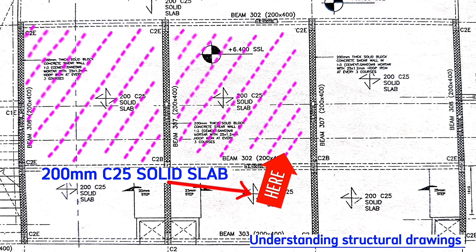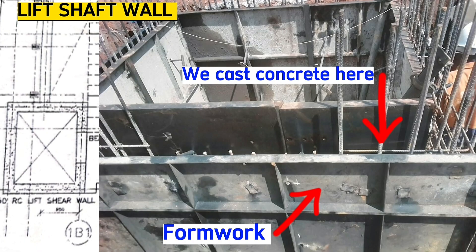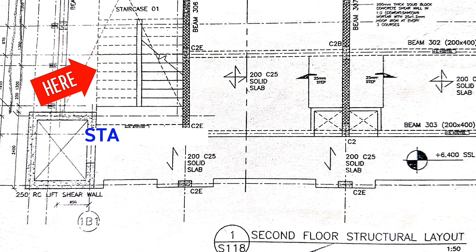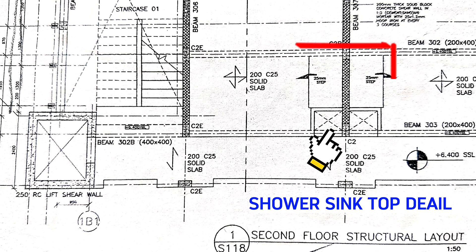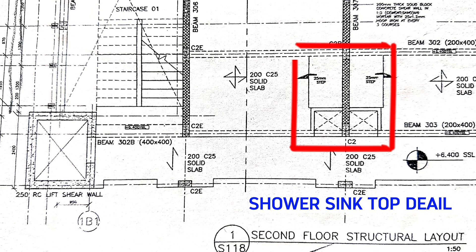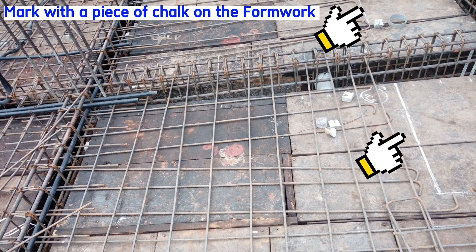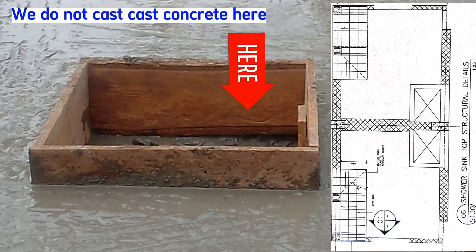This is a lift shaft wall — we do its formwork and cast its concrete here. These are staircases; we do formwork and cast concrete for them here. This is the part for the showers, and on the upper floors we leave this portion untouched. We mark it with chalk on the formwork and put some kind of foam insert. When casting concrete, we ignore this part.